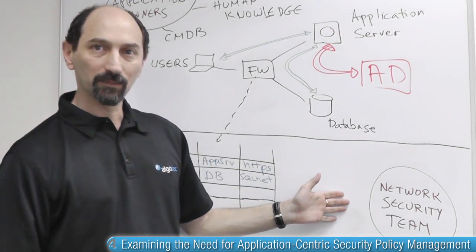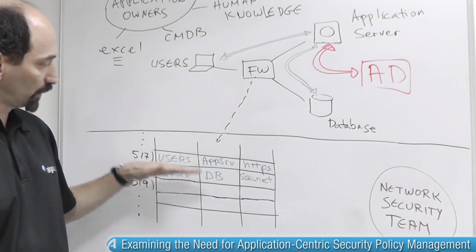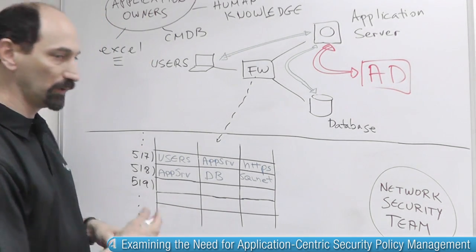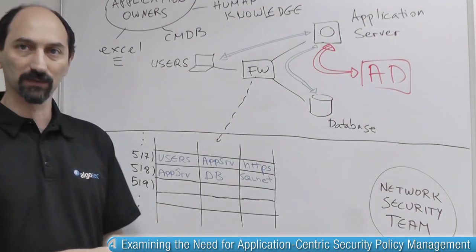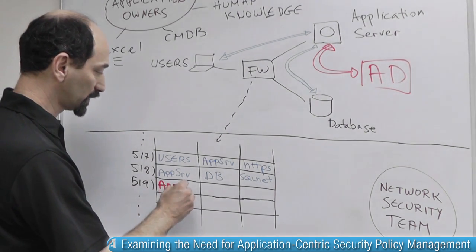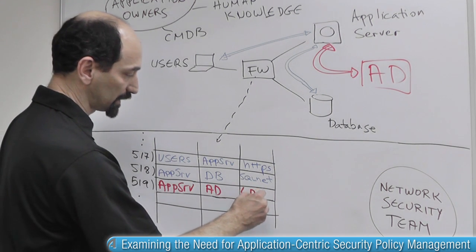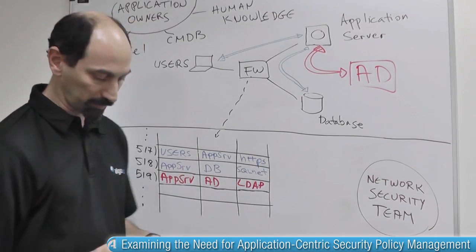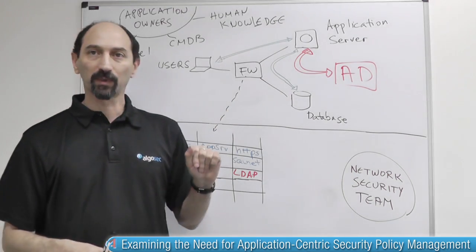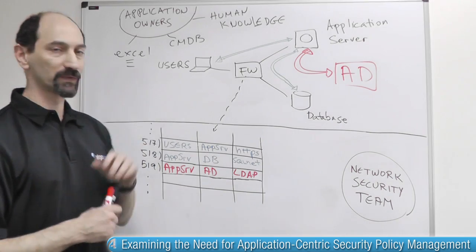The network security team has to understand what is required and translate the request into firewall policy rules. At the end of the day, we would like to be in a situation where a new rule is injected in the right place into the policy, and it would say something like allow traffic from the application server to the Active Directory using the correct service — in this case LDAP. Once this is done, the new version of the application, including the new connectivity, can start to function and provide improved service to the users.